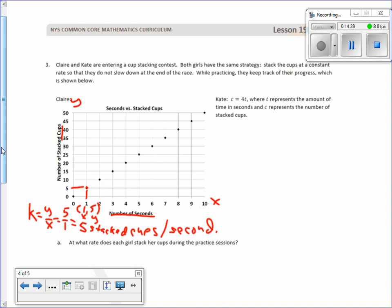Then we look over here at this equation. And it says c equals 4 times t. So there is our k right there. So k equals 4, which tells us that Kate stacks 4 cups per second. Well, Claire stacks 5 cups per second. So Claire can do one more cup per second. She's faster. So what rate does each girl stack her cups during the practice session? 5 stacked cups for Claire, 4 stacked cups for Kate.